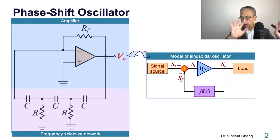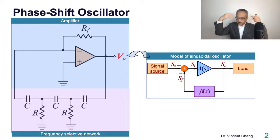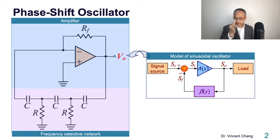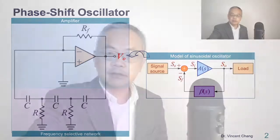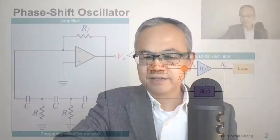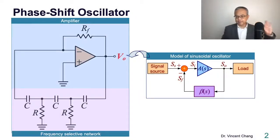So three is the minimum number. Put this on your note: it's the minimum order for a signal passing through an RC network — a frequency selective network — which can create another 180 degrees to make the whole circuit satisfy the Barkhausen criterion at the frequency of oscillation. That's the key concept. You might wonder about four — yes, you can use four, but you bring yourself trouble and make the circuit even more complicated. Three is the minimum.